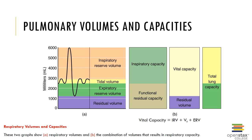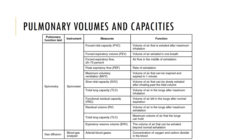Vital capacity, or VC, is the maximum amount of air that you can move into or out of the lungs in a single respiratory cycle, equal to IRV plus tidal volume plus ERV. Total lung capacity, or TLC, is the volume of the lungs and is the sum of all four respiratory volumes: TLC equals IRV plus tidal volume plus ERV plus residual volume. These volumes and capacities are outlined here.